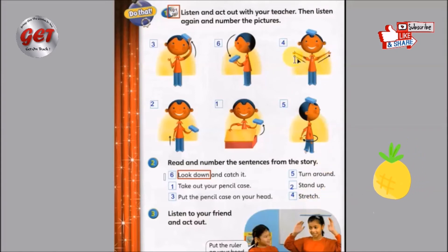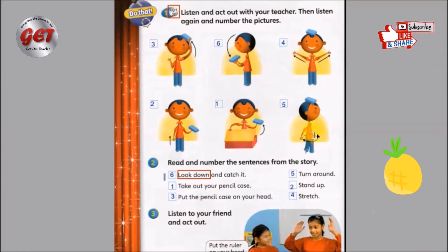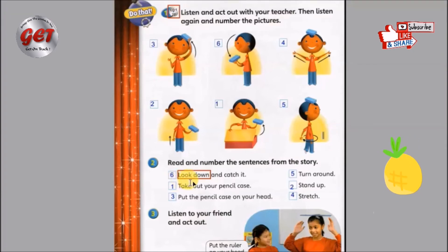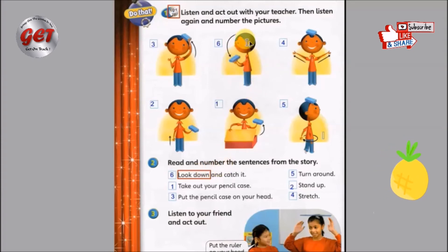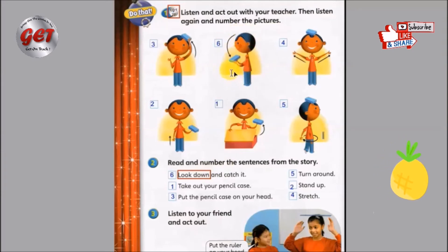Four, stretch your hands. 第四，把双手张开来。Fifth, turn around. 第五，转圈圈。因为你张开双手过后呢，就方便你转圈圈。6, look down and catch it. 第六个动作就是往下看，然后笔盒就掉下来，你就要用双手接着它。Well, the pencil case will fall down when you look down, and you have to catch it with your hands.